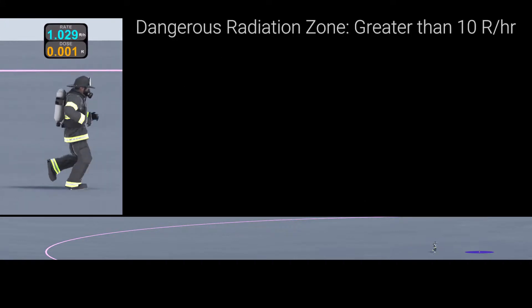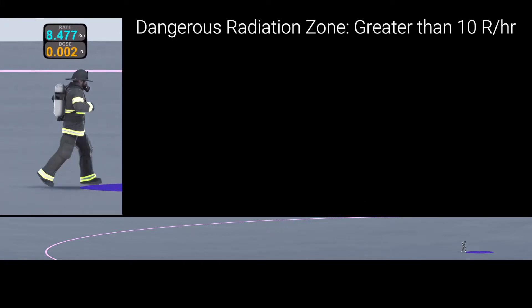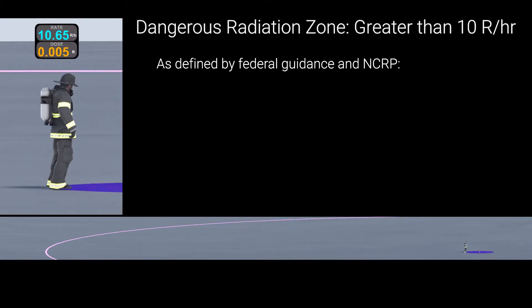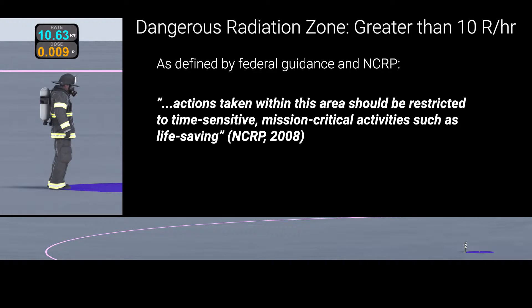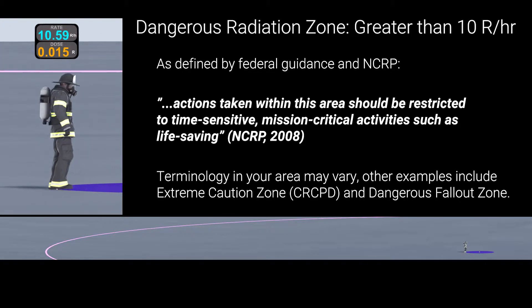The dangerous radiation zone is defined as any area greater than 10 r per hour. Activities in this zone should be restricted to time-sensitive, mission-critical activities such as immediate life-saving, and should be performed as rapidly as possible.